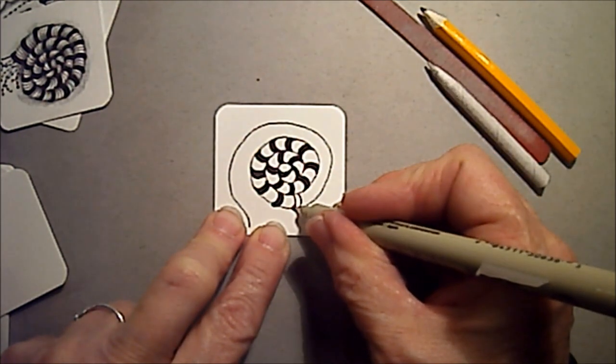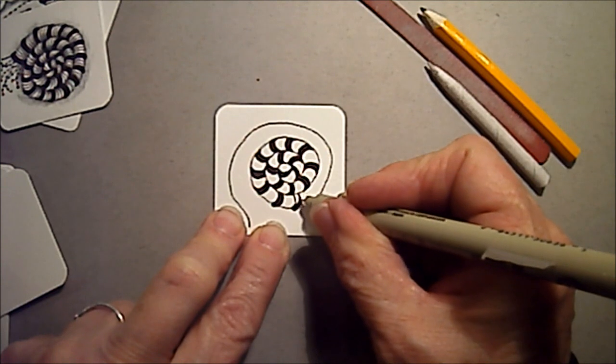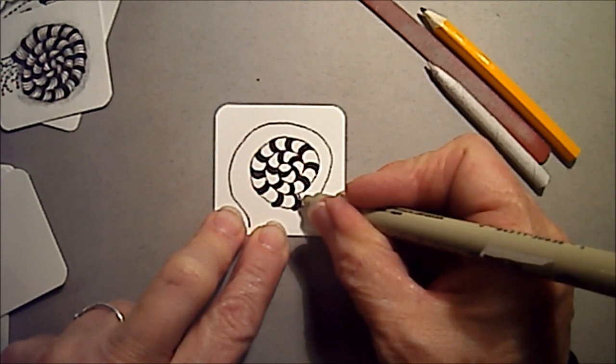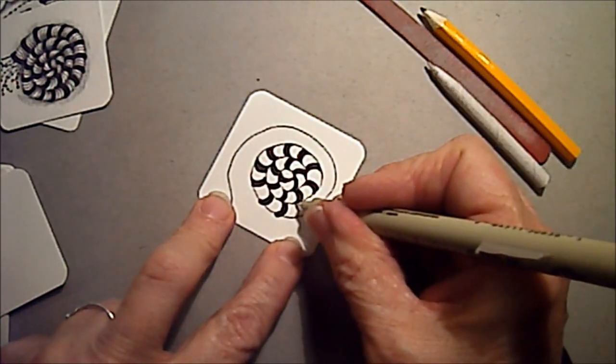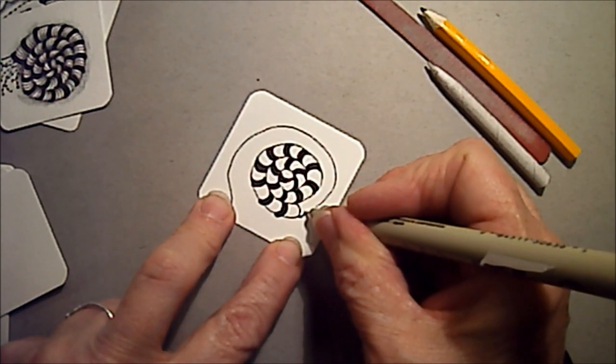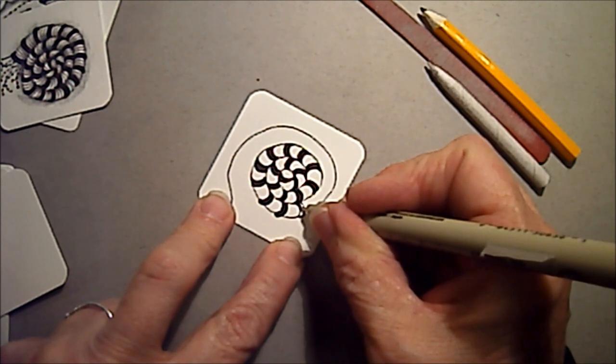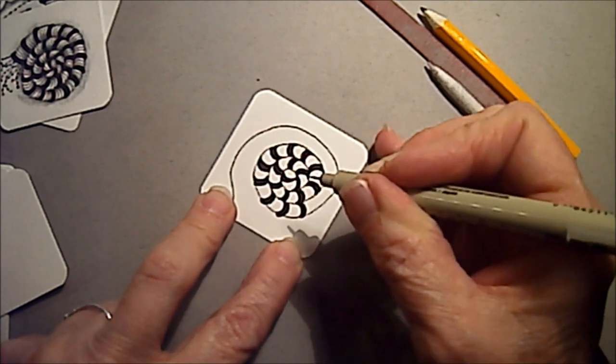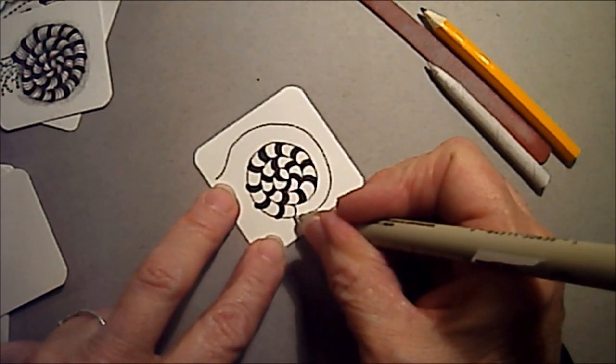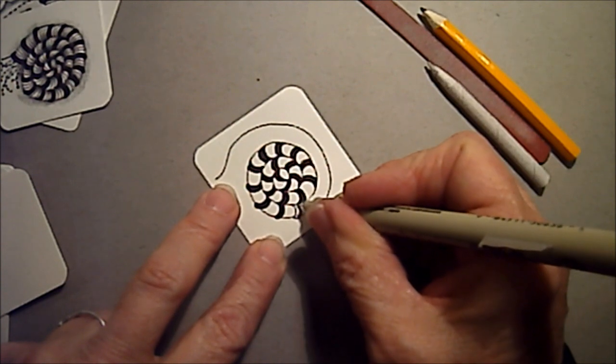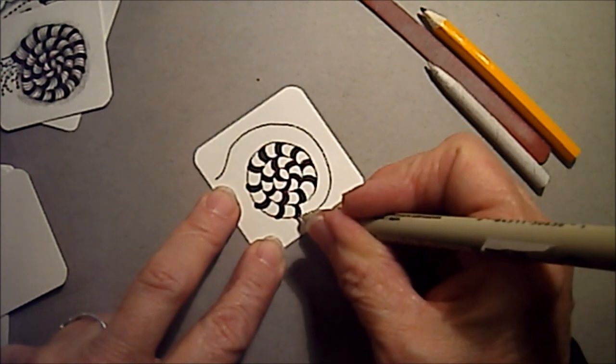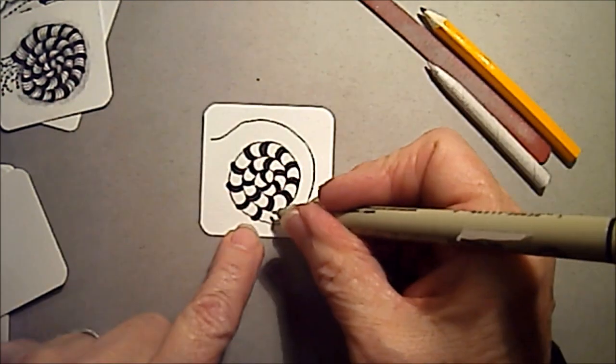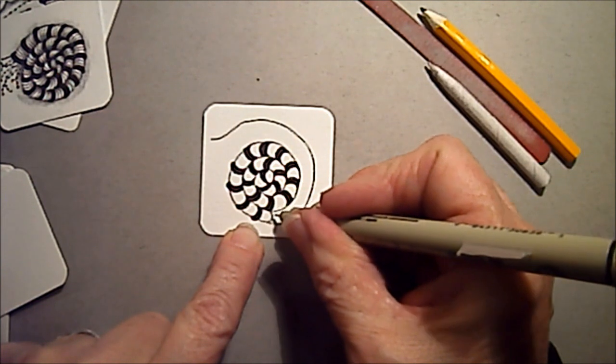What that does is that makes these stripes look like they're another, it just makes them look like they are a thicker piece that's wrapping around that original spiral. It's not something you have to do, but it just makes it look a little thicker, like I said, another piece of something wrapped around it.